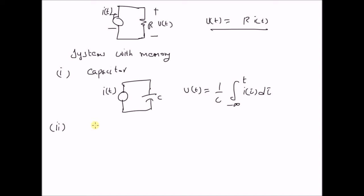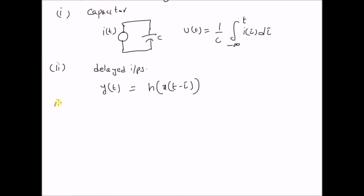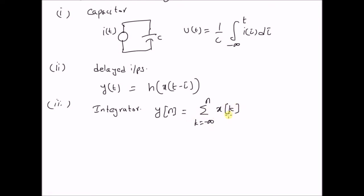Another example of a system with memory is one which deals with delayed inputs — that is, systems with delayed inputs. The current output y(t) is a function of x(t minus τ), so the current output is a function of the previous inputs — specifically the input from a specific time t minus τ. Another example is a system known as an integrator, which adds all the values of the input from minus infinity to the current value. If you compare this with the capacitor, the capacitor can be seen as an integrator of the electric current, and this is a general system model for an integrator.